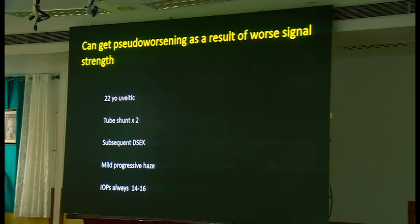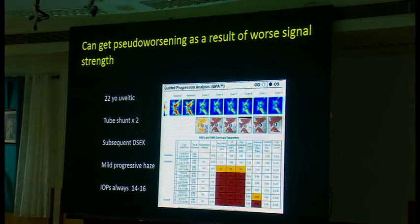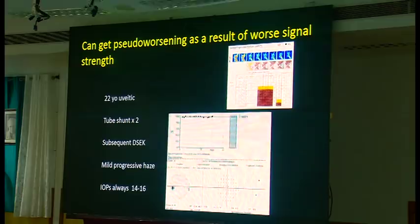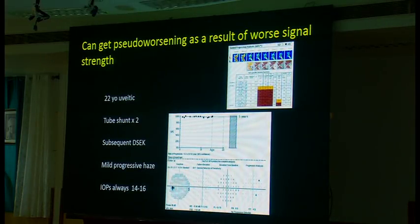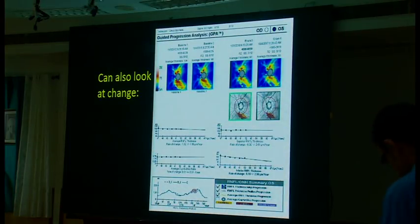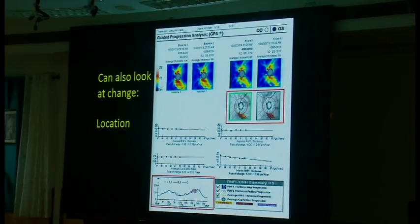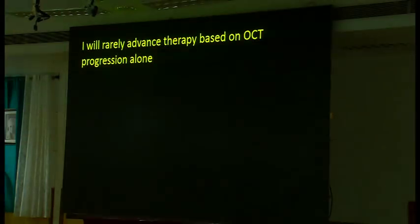You can get pseudo-worsening as a result of changing signal strength. Here is a 22-year-old whose PSC was becoming slightly cloudy, signal strength was decreasing, and you could see a great degree of apparent worsening even though IOP was controlled. Her visual field remained stable even though the OCT went from a very normal range to a significantly abnormal range. You can also look at change plots showing areas of significant worsening highlighted in orange or red, and the lower left will highlight areas worse from baseline.